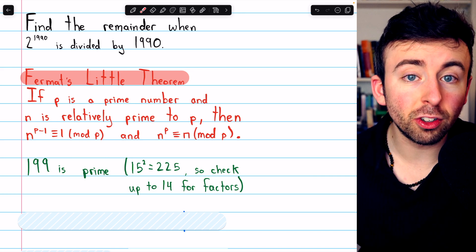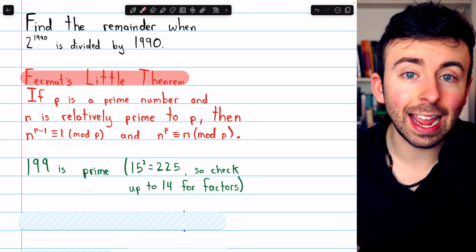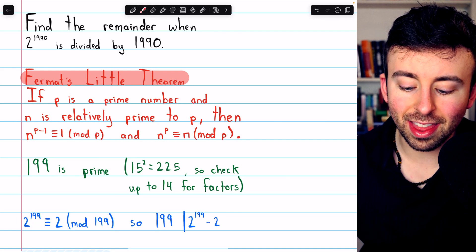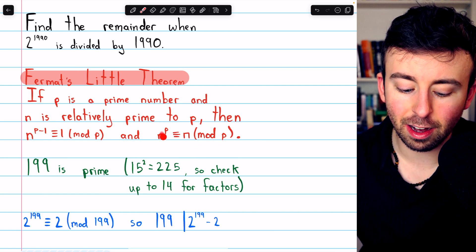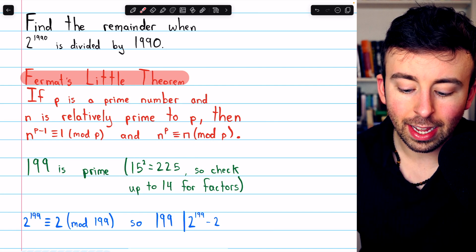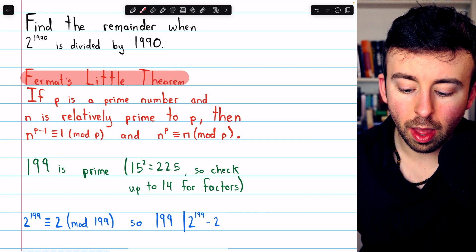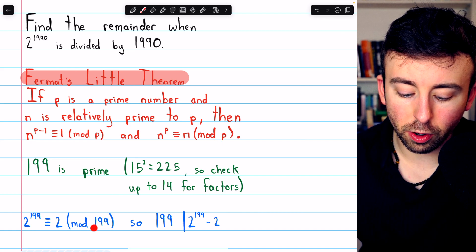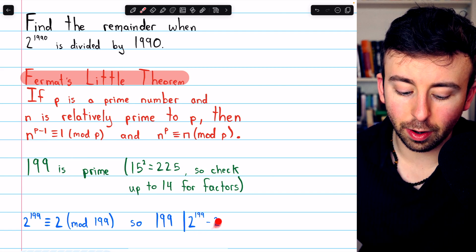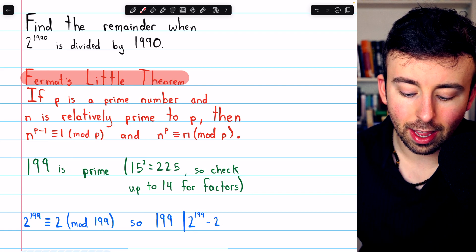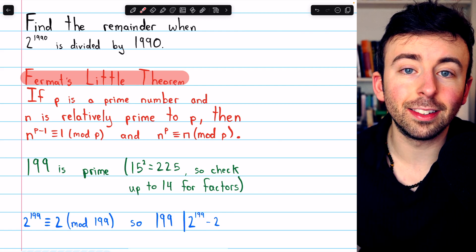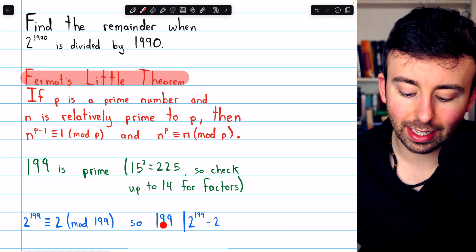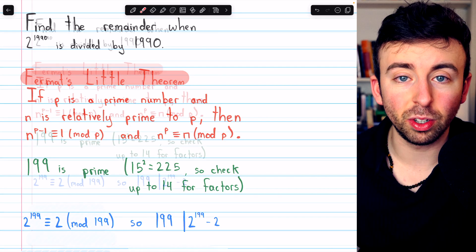And so is 2. So 199 and 2 are relatively prime, and thus we can apply this part of Fermat's little theorem. 2 to the 199 is congruent to 2 mod 199. This means then that 199 must divide their difference. 2 to the 199 minus 2 is congruent to 0 mod 199. So 199 divides 2 to the 199 minus 2.